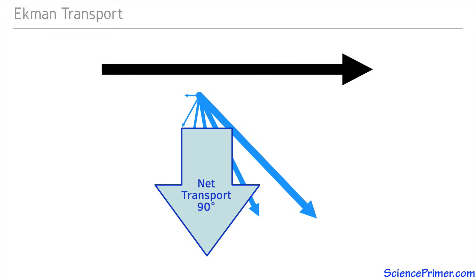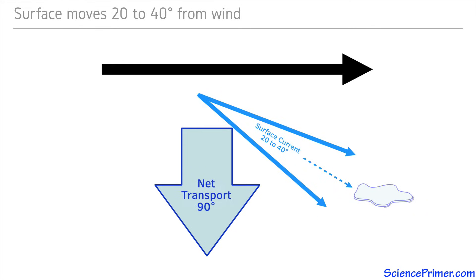Because this is all driven by the Coriolis effect, the deflection is 90 degrees to the right in the northern hemisphere and 90 degrees to the left in the southern hemisphere. This movement of water at right angles to the direction of the prevailing winds is called Ekman transport. Consistent with Nansen's observations, the water right at the surface moves 20 to 40 degrees to the right or left of the wind direction. This variability is driven by differences in how long and how consistently the wind blows.